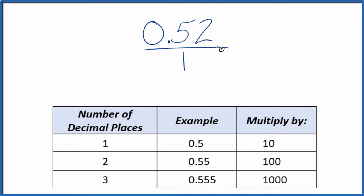We need to get this 0.52 to a whole number. So what we can do, we have two decimal places. Two decimal places, we're going to multiply 0.52 by 100. So 100 times 0.52, that's 52. So now we have a whole number.